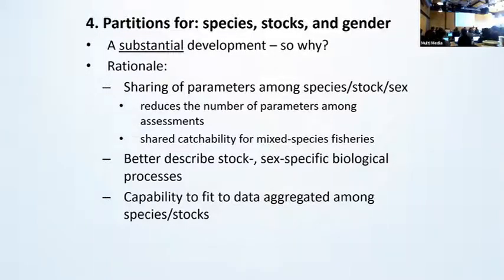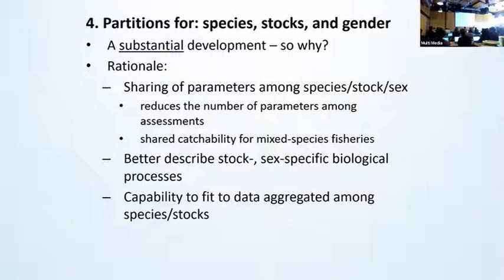Moving now on to the partitions for species, stocks, and gender. Space and tag partitions were inherent in the original MultiFAN-CL data structures when the model was originally written — and recall it's been around and been used for 20 years now. So the partitions for species, stocks, and gender were only recently added, with the development starting in about 2010. Now why should one embark on such a large-scale endeavor?